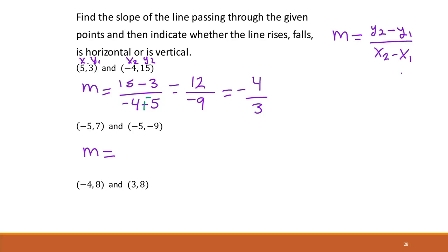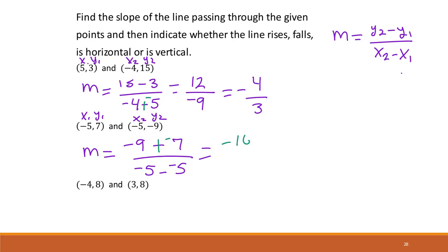We can do the same thing for the next one. So we have negative 9 minus 7 over negative 5 minus negative 5. Thinking about our rules, the numerator gives negative 16. In the denominator, minus minus becomes plus a positive when we have two negatives next to each other, so that gives 0. Anytime we get 0 at the bottom, that means the slope is undefined, which indicates a vertical line.